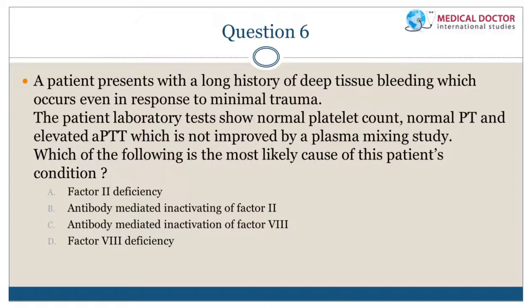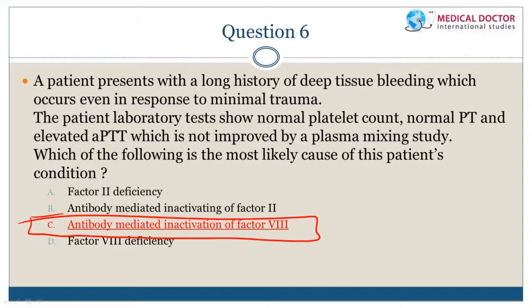Practice question: A patient with coagulopathy history showing normal platelet count, normal PT, and elevated aPTT not improved by plasma mixing study suggests an immunoglobulin inhibiting a clotting factor. The most likely diagnosis is inactivation of factor 8 by antibodies.